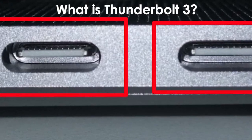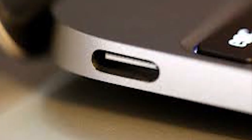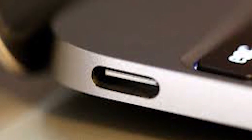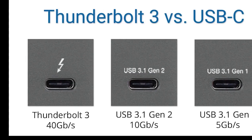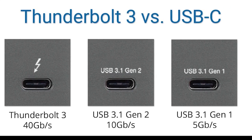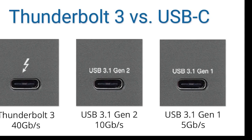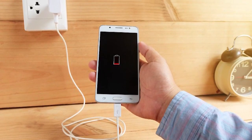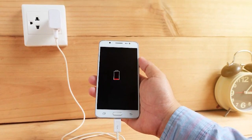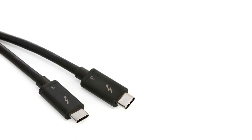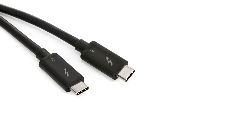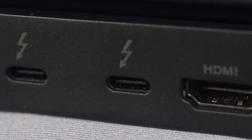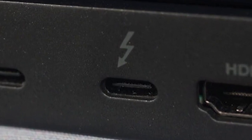What is Thunderbolt 3? Thunderbolt 3 ports look exactly the same as USB-C ports, and indeed the connector is physically the same from a plug-in perspective. In many cases, they can do everything that a USB-C port can, except much faster. Indeed, Thunderbolt 3 is a superset of USB-C. You can plug a USB-C-only device into a Thunderbolt 3 port on a computer, and it'll work just fine.